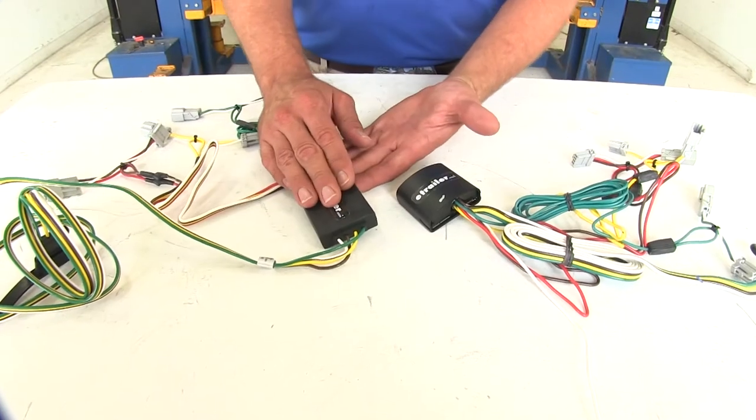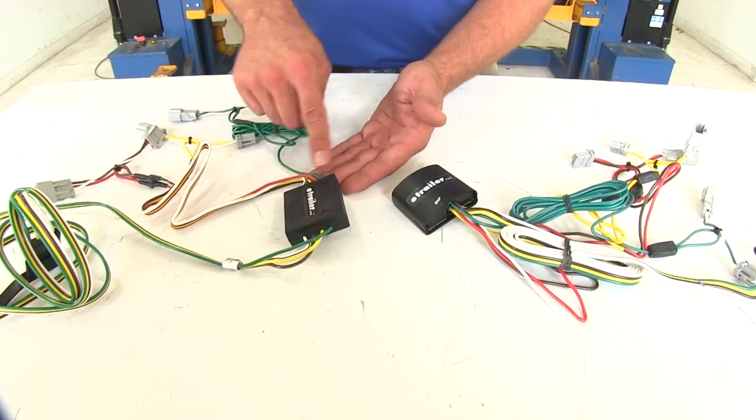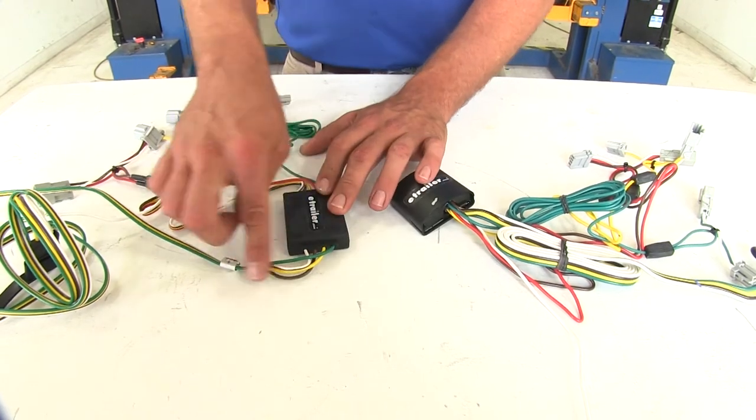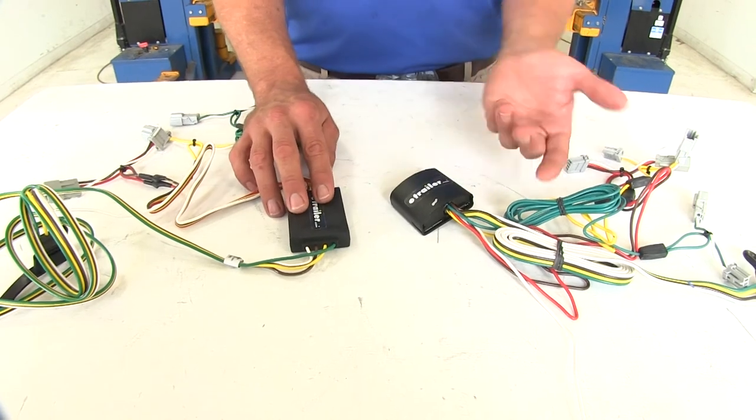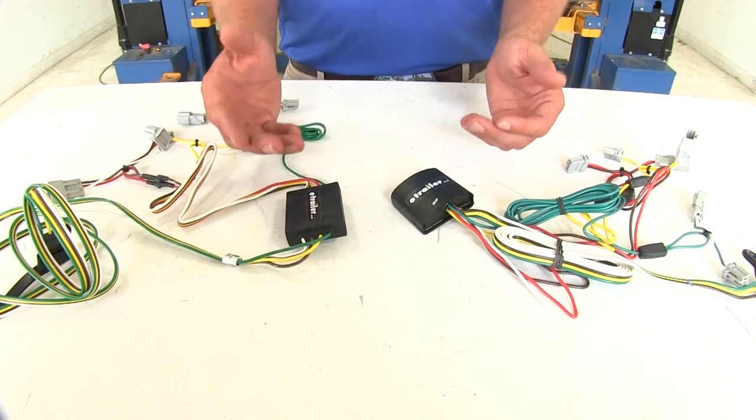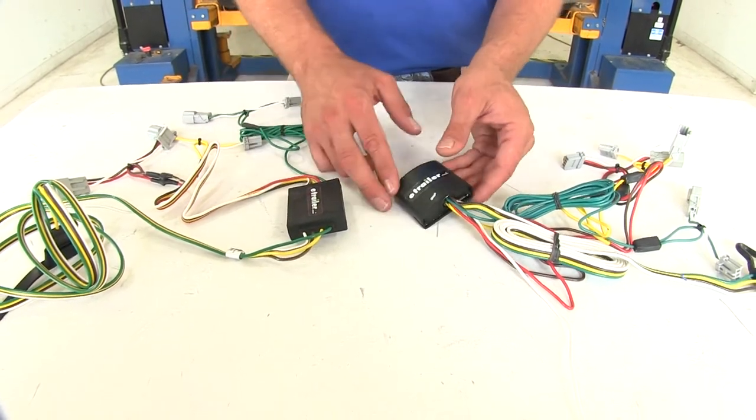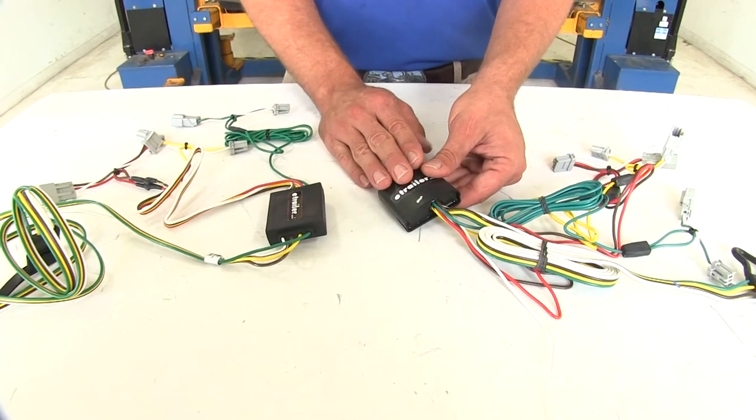Both of our converter boxes have a circuit board in here and that's what takes the power and converts the signal into a usable signal for our trailer. They both use what's called surface mount technology. So the circuit boards are pretty robust, but something I think Tekonsha definitely does better.